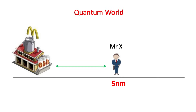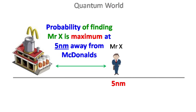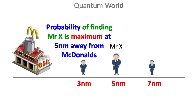Because in quantum mechanics every particle is located based on its probability, so instead of saying Mr. X is located five nanometers away from McDonald's, we will have to say the probability of finding Mr. X is maximum five nanometers away from McDonald's. However, Mr. X can be present either three nanometers or seven nanometers away from McDonald's — it's just the probability.